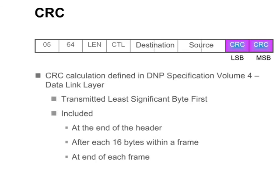The CRC calculation is defined in the DNP3 specification volume 4 data link layer. The CRC is transmitted least significant byte first and is included at the end of the link layer header, after each 16 bytes within a frame, and at the end of each frame. The next slide provides an exercise using the communication protocol test harness to analyze link layer messages.